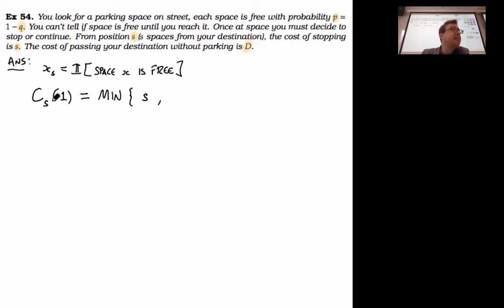What's the expected continuation cost? I'm going to drive from position s to position s minus 1, the next place. So we have to look at what the expected cost of that is. Two things can happen: I move one space further and either the space is free or isn't free. With probability p, the space is free, and then I get the cost of s minus 1 spaces to go and I arrive at a free space. Or with probability q equal to 1 minus p, I get the cost of being s minus 1 spaces to go and there's a space that's taken.